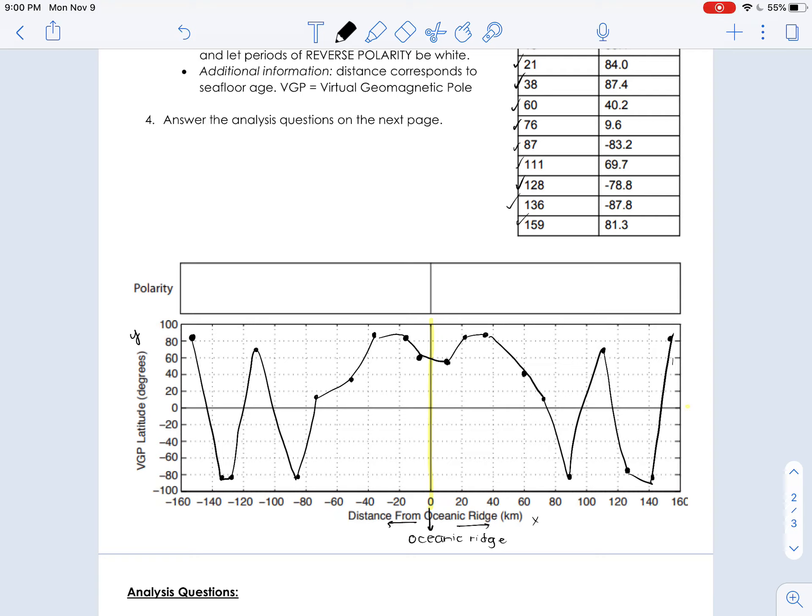So the rocks that are 20 kilometers to the left and 20 kilometers to the right of the ridge are going to match. The same as rocks 1,000 miles to the right and 1,000 miles to the left of the ridge are going to match.